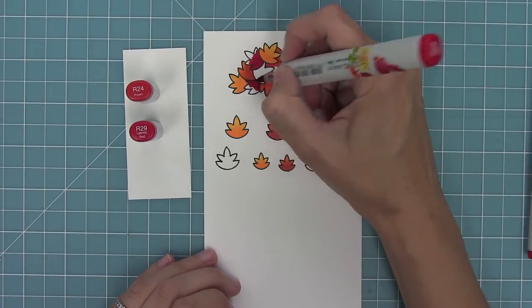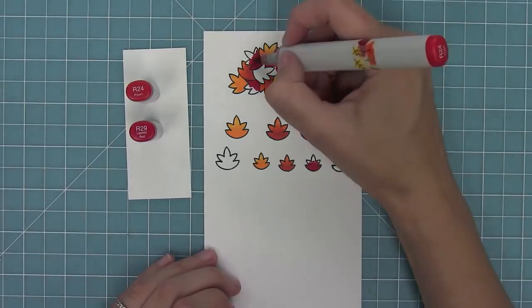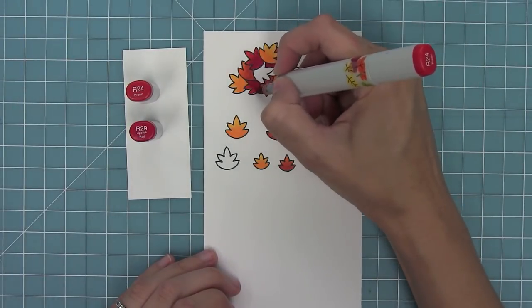Now I'm adding some red leaves, doing the same thing where I'm blending out the color. I'm adding my darkest color there and then blending that color out with my lightest marker.